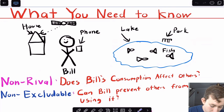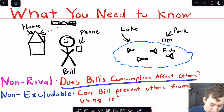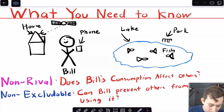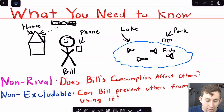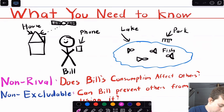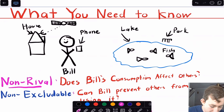Non-rival means: does Bill's consumption affect others' ability to consume it? And non-excludable means: can Bill prevent others from using it? Let's go through each of these goods and put a check mark by it if it's non-rival.